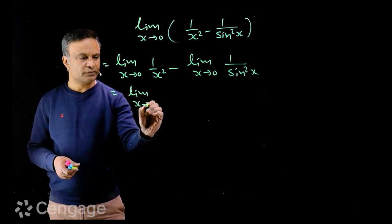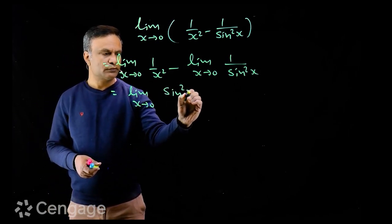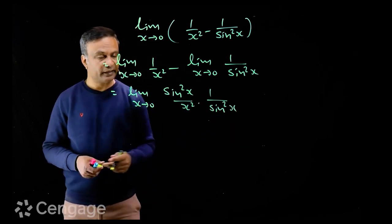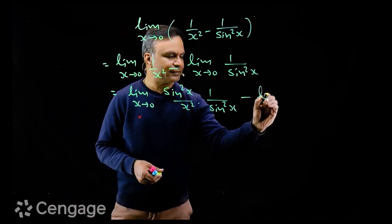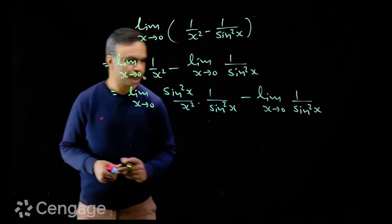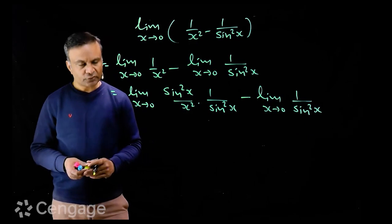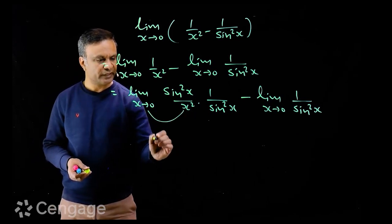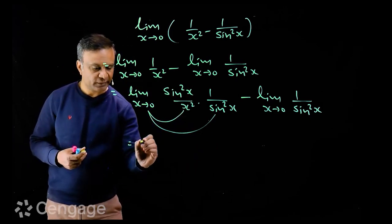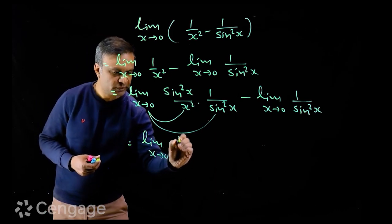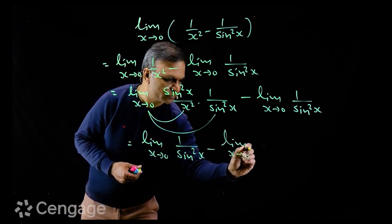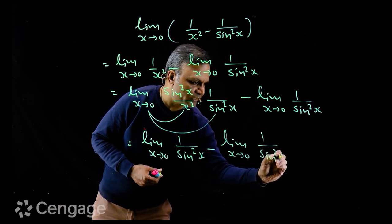This equals the limit as x tends to 0 of (sin²x / x²) multiplied by (1/sin²x), where we are multiplying and dividing by sin²x, minus the limit of 1/sin²x. We then distribute the limit to sin²x/x² and 1/sin²x. Since the limiting value of sin²x/x² is 1 when x tends to 0, we write: limit of 1/sin²x minus limit of 1/sin²x.